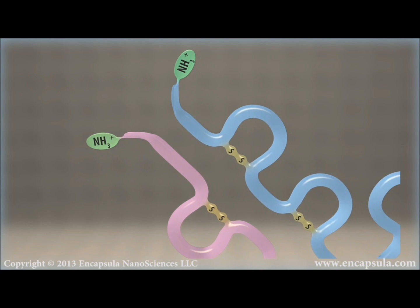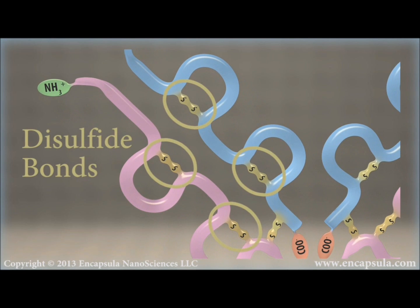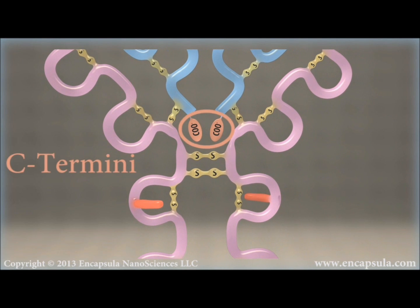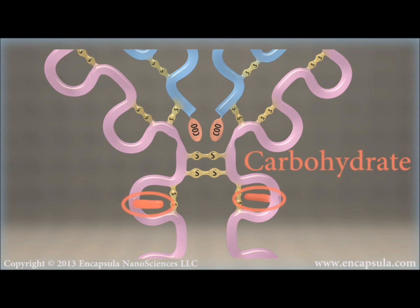The heavy and light polypeptide chains of the antibody are held together by disulfide bonds. The C-terminus is the end of an amino acid chain terminated by a free carboxyl group. The two identical heavy chains each carry covalently attached oligosaccharide groups.